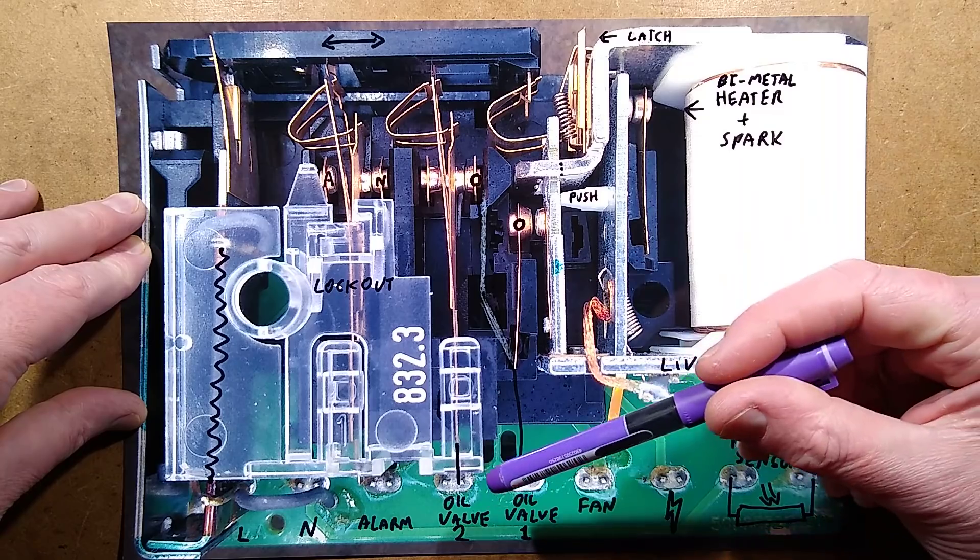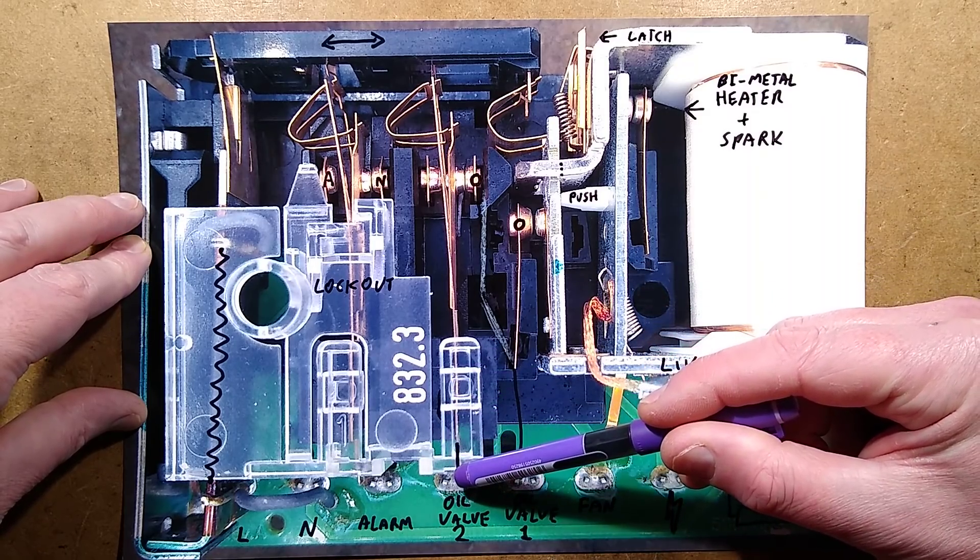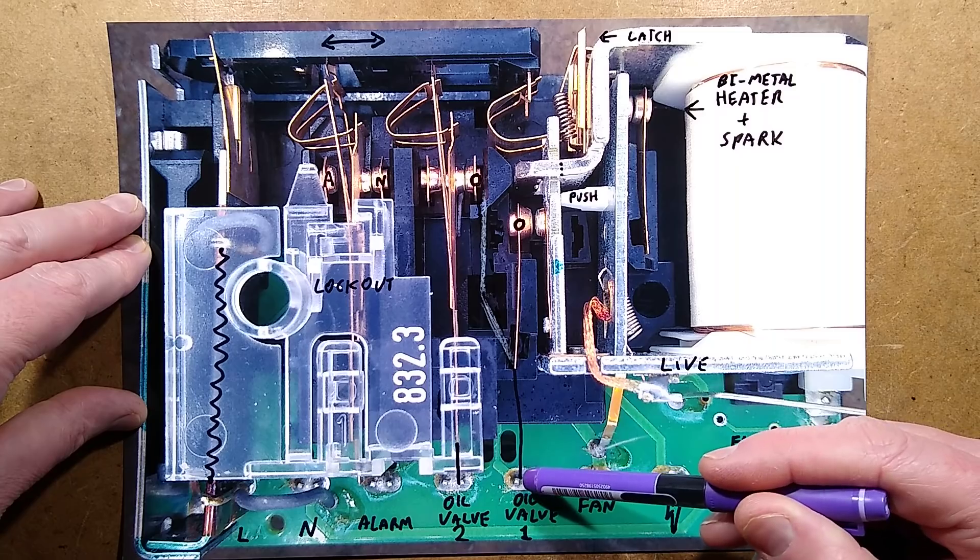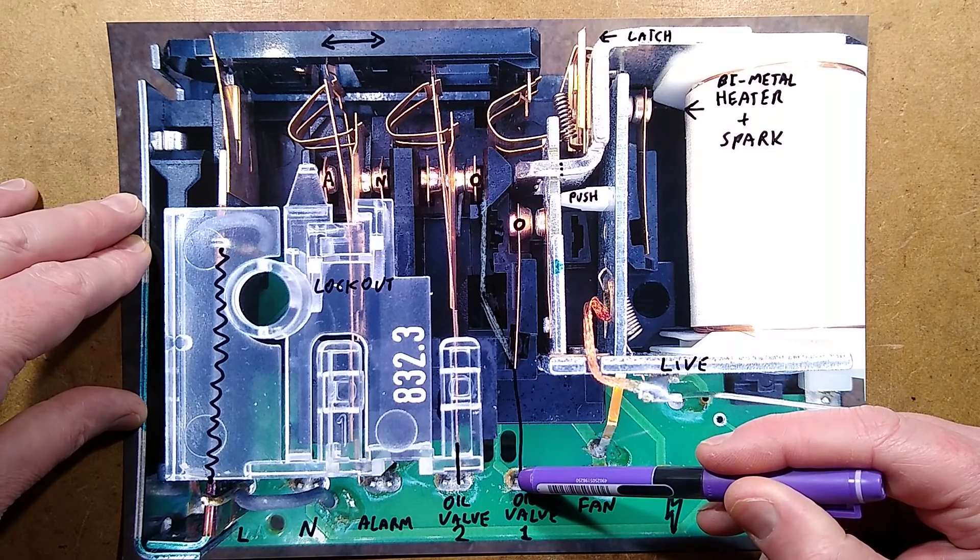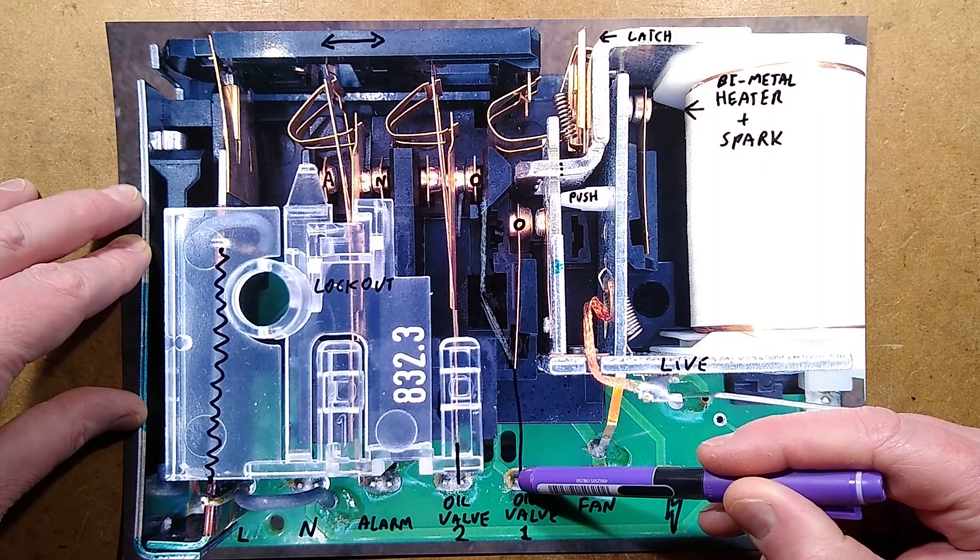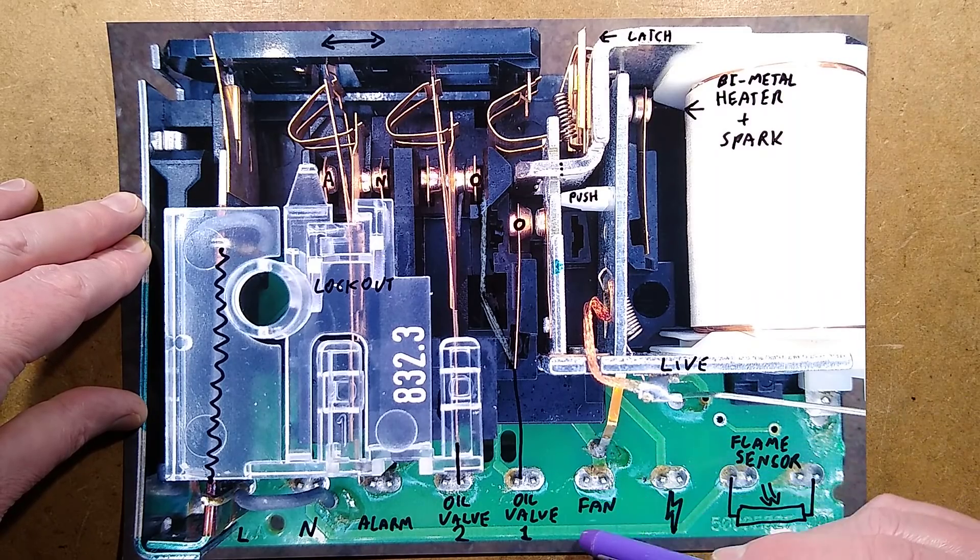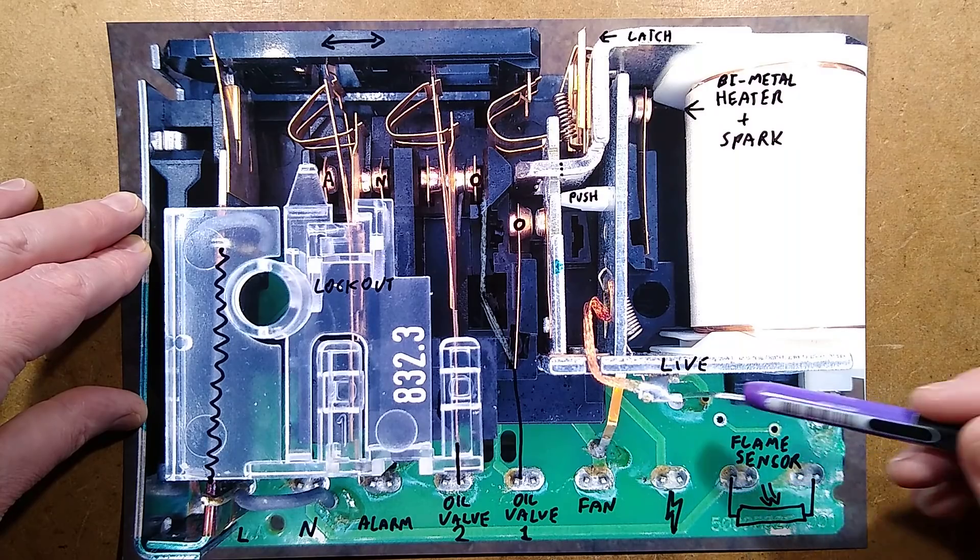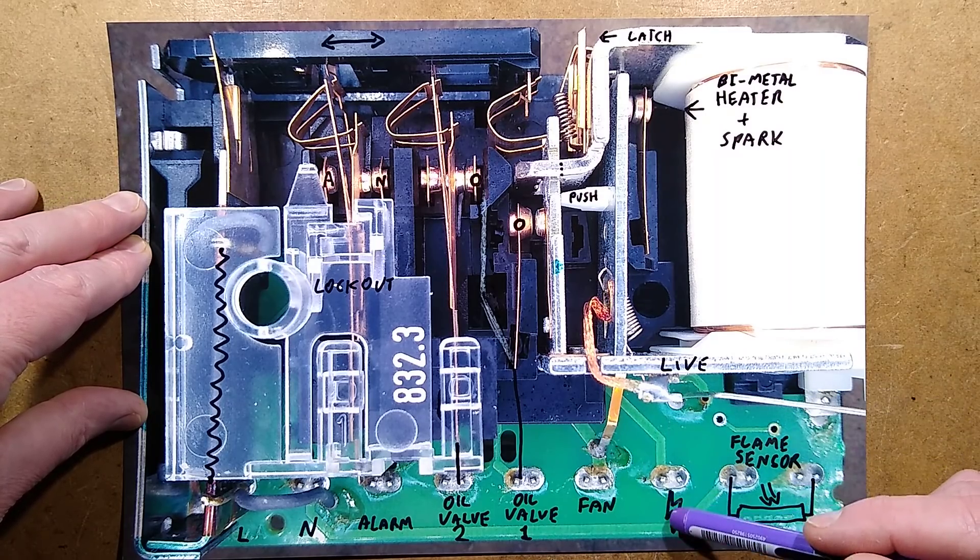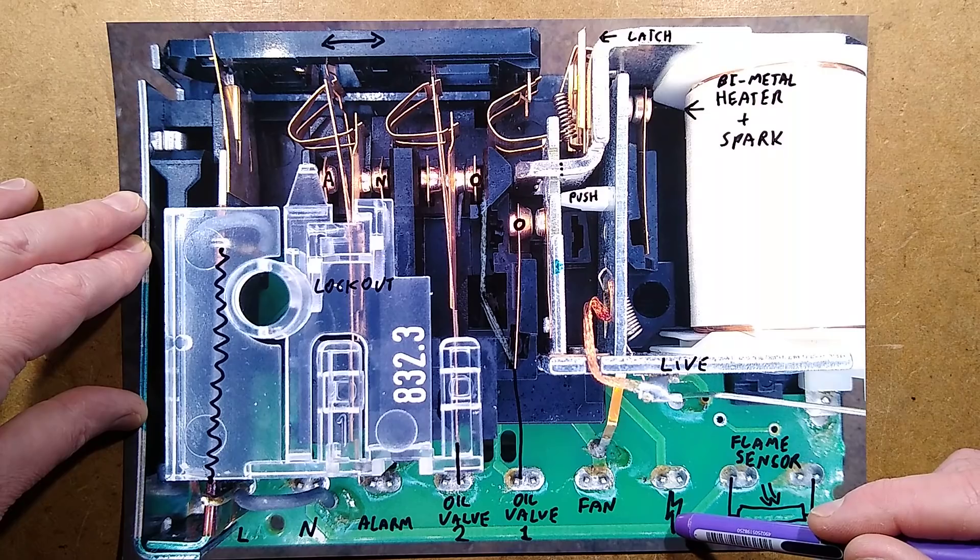Right, the hardest thing about this video is working out where to start. Let's start with the connections at the bottom of the unit. We have live, we have neutral, we have the alarm output which goes live when it goes into alarm mode. We have oil valve 2, which isn't always used, in this case it's not used, and oil valve 1.